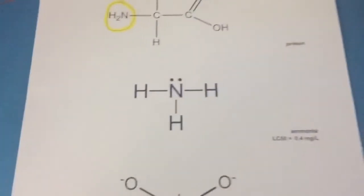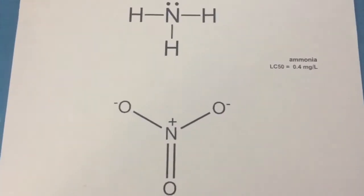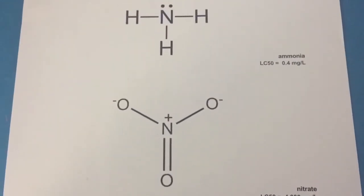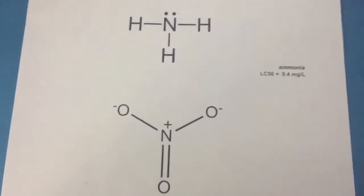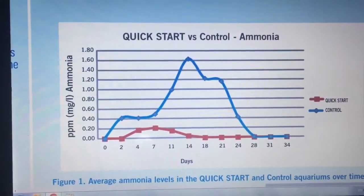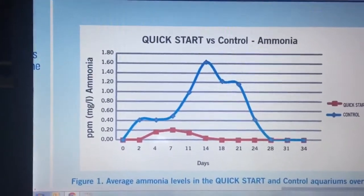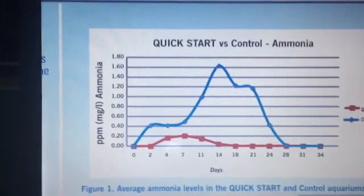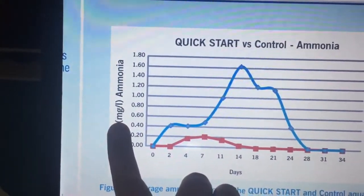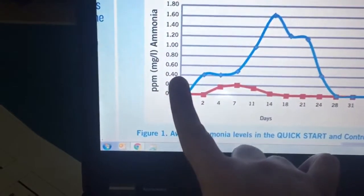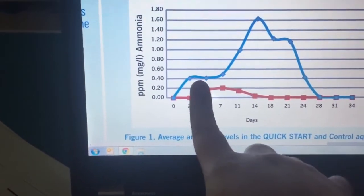Before I move on to plants, just in case anyone watching this has an ammonia spike: do you have to wait for the bacteria to breed up before you can get rid of the ammonia? The answer is no. There's a new product called API Quick Start, and they have convincing graphs showing their bottled bacteria is alive. I thought: can you bottle bacteria and keep it alive? That sounds like it wouldn't work. But based on their graphs, it looks like it does. Here's milligrams per liter of ammonia, and remember this LC50 is the amount that would kill half the population in 72 hours for bay scallops.